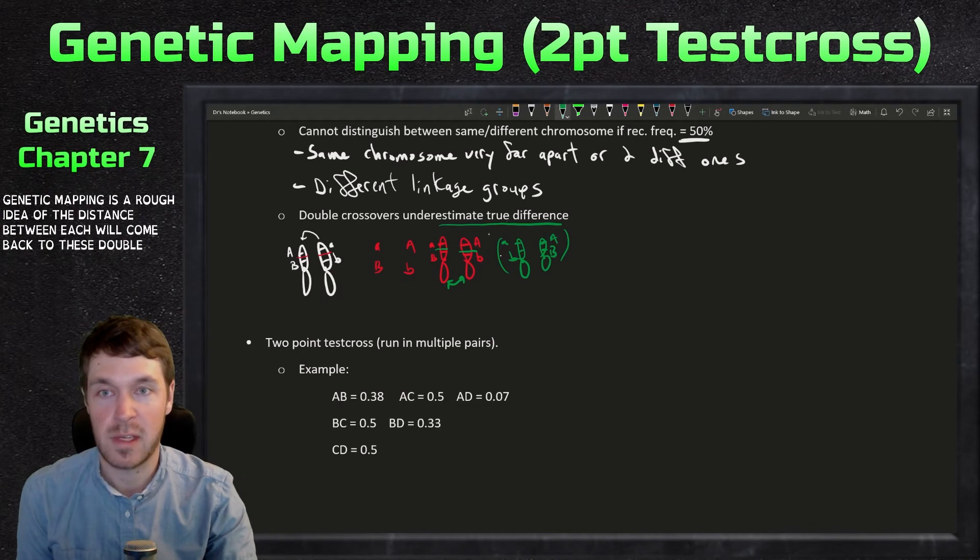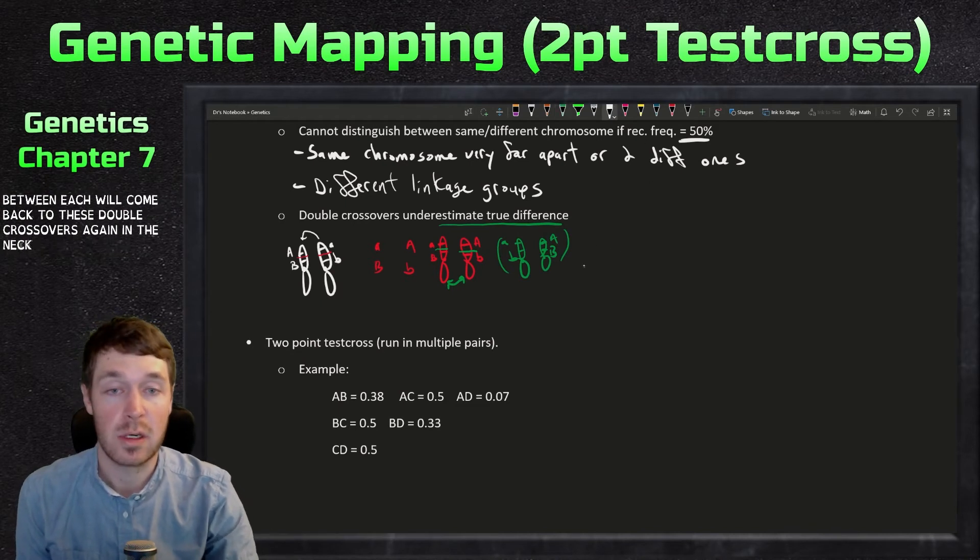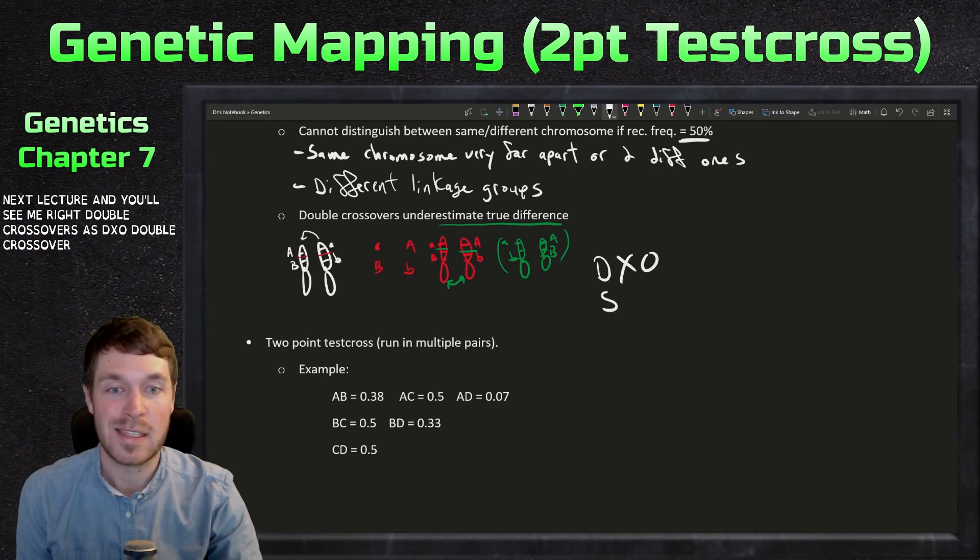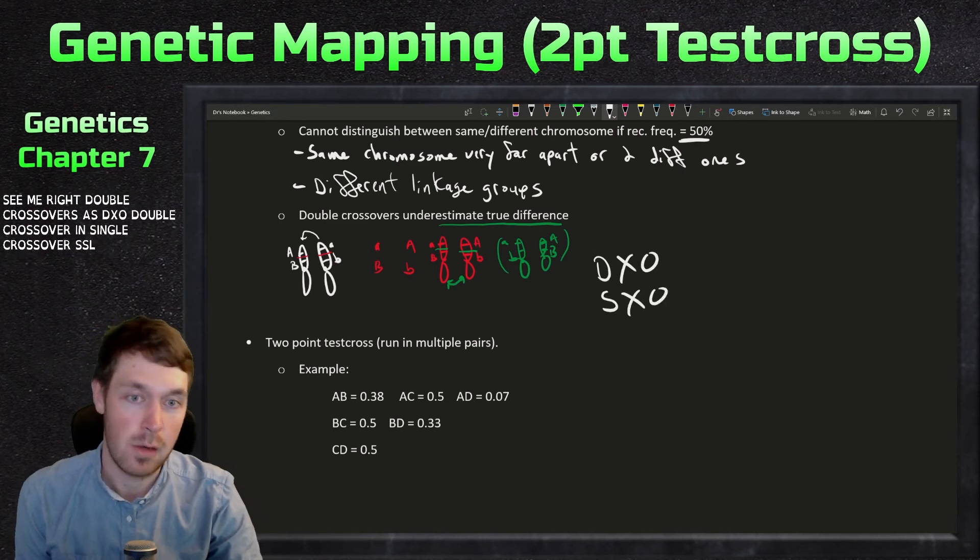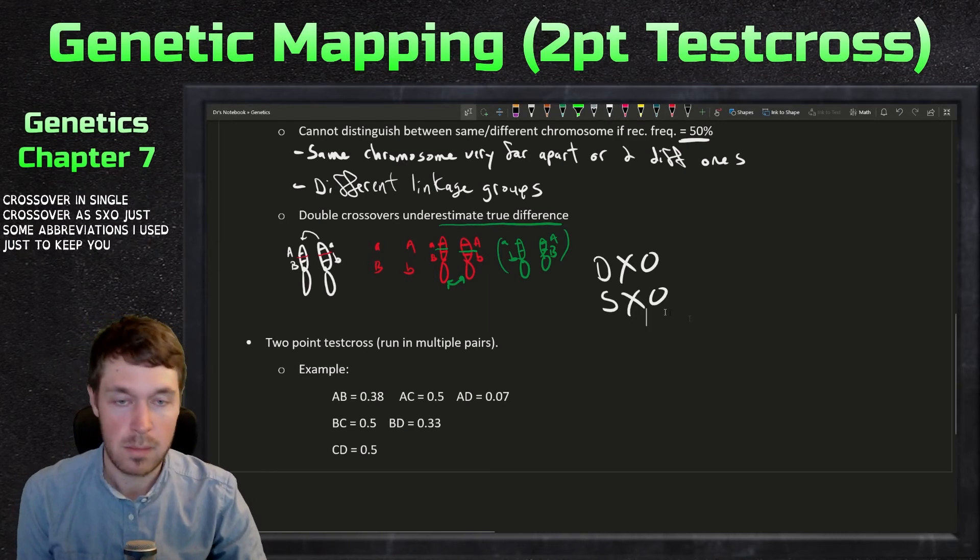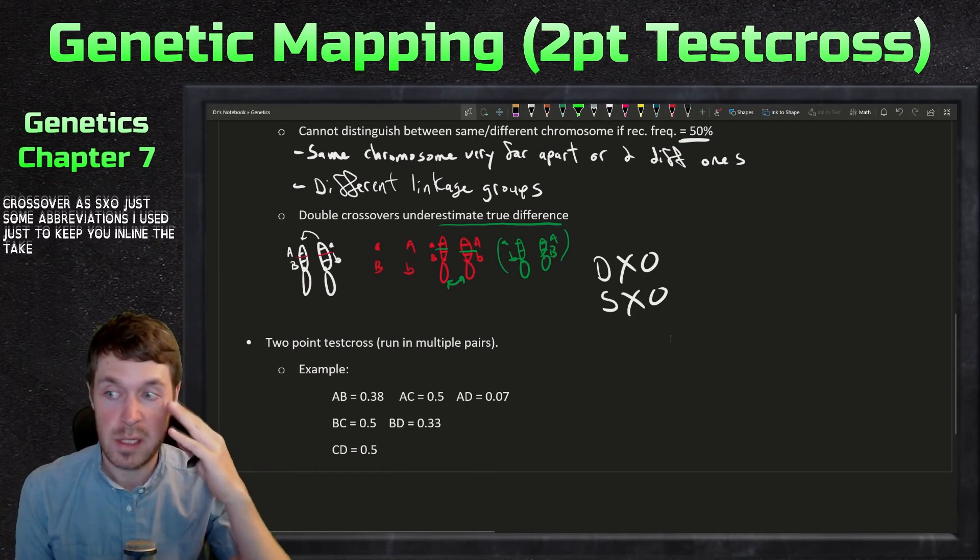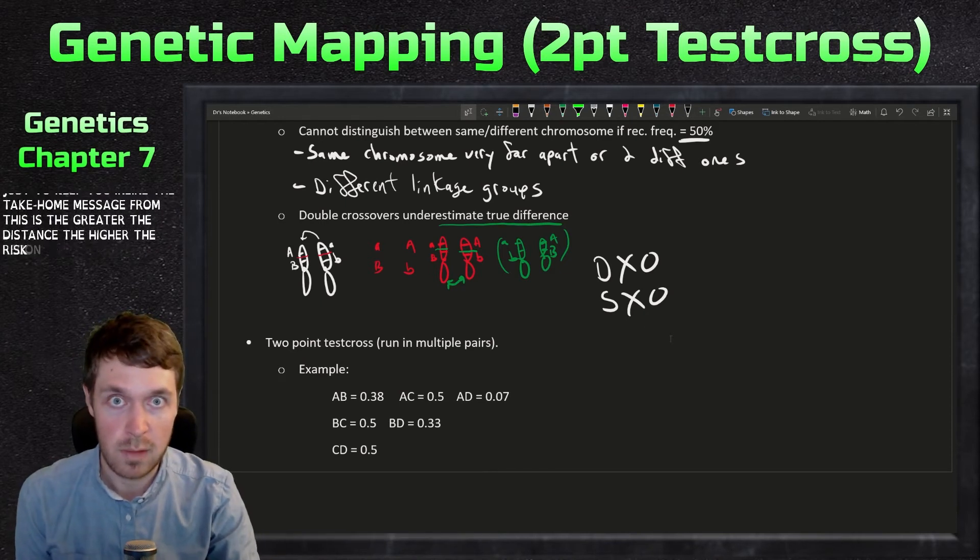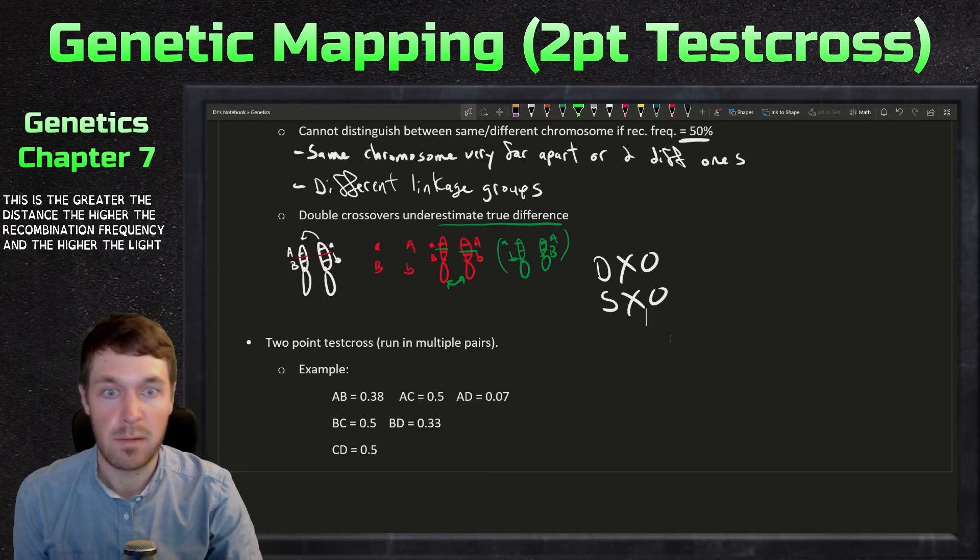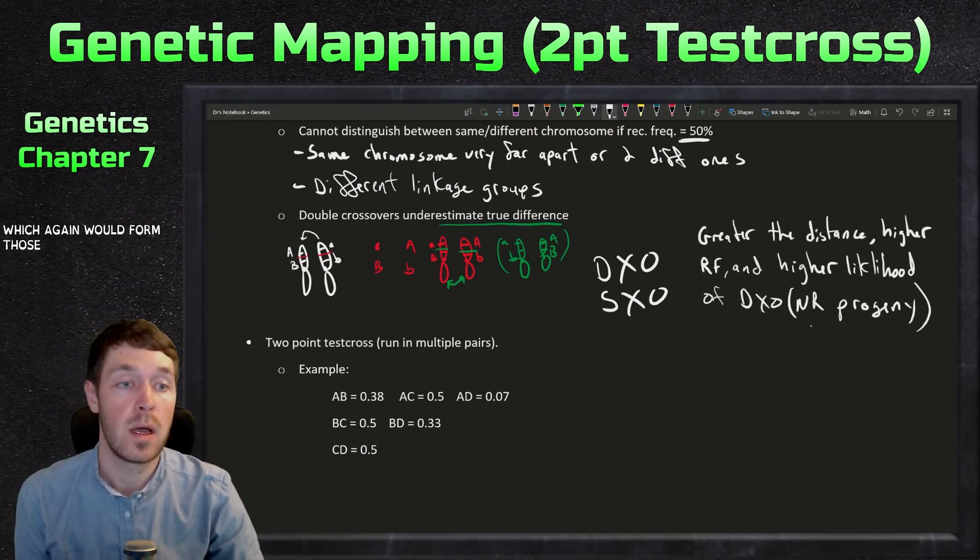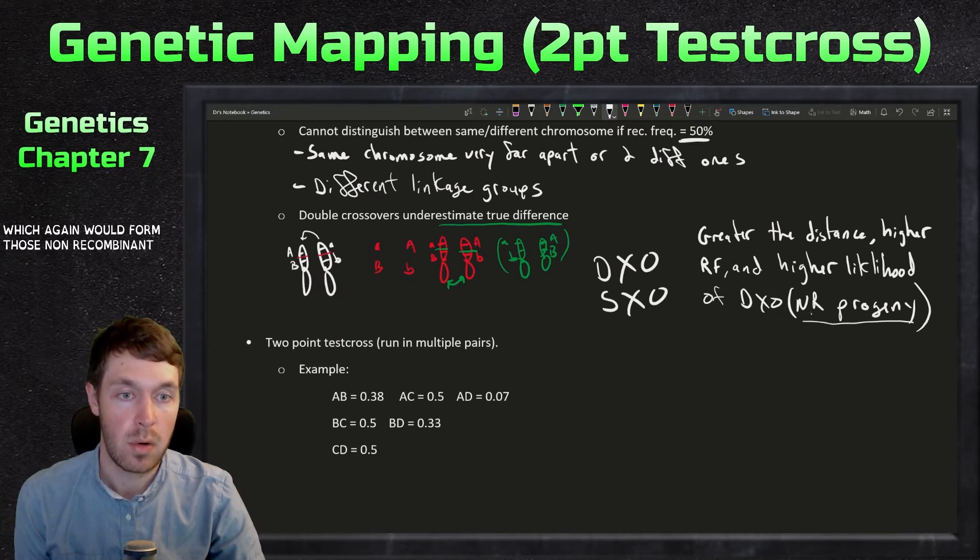That's why genetic mapping is a rough idea of the distance between each. We'll come back to these double crossovers again in the next lecture. And you'll see me write double crossovers as DXO, double crossover, and single crossover as SXO. Just some abbreviations I used. So the take home message from this is the greater the distance, the higher the recombination frequency, and the higher the likelihood of double crossing over.